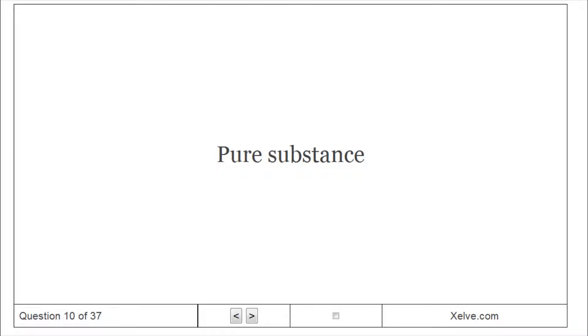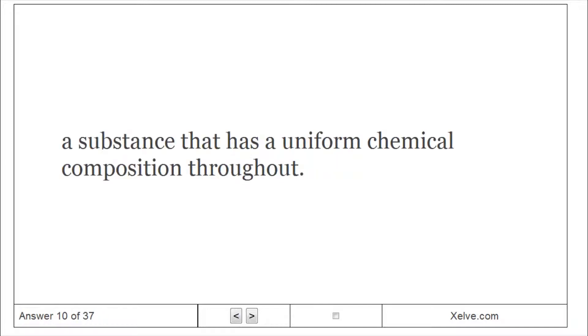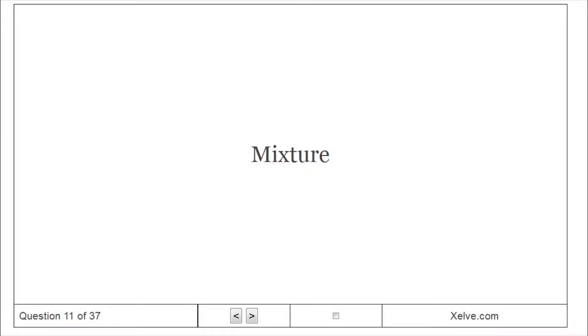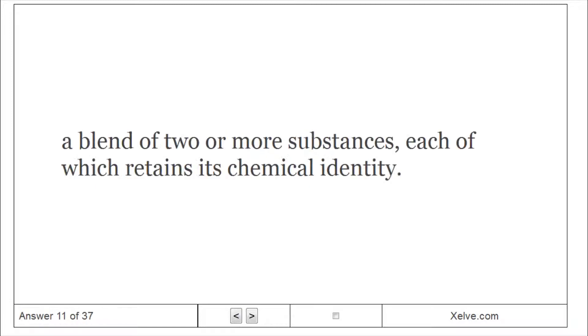Pure Substance: A substance that has a uniform chemical composition throughout. Mixture: A blend of two or more substances, each of which retains its chemical identity.